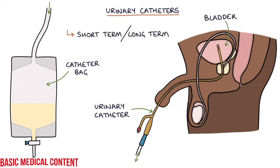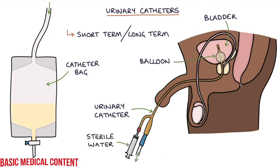When urinary catheters are left in the bladder, a balloon on the end of the catheter is inflated inside the bladder with sterile water, usually about 10 milliliters, preventing the catheter from falling out.